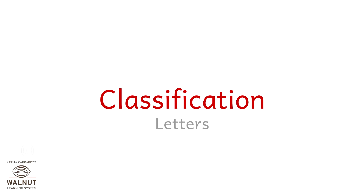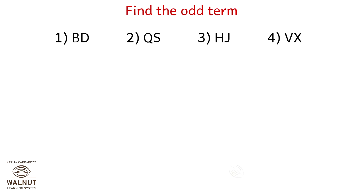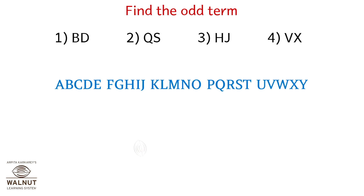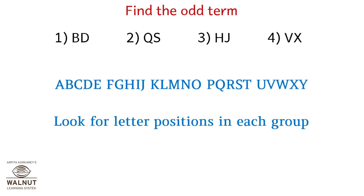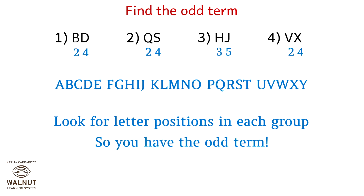Classification of letters. Find the odd term. The series BDQSHJVX is given below. Look for the letter positions in each group. The positions sum to 24, 24, 35, and 24. So we know what the odd term is — it's option 3.